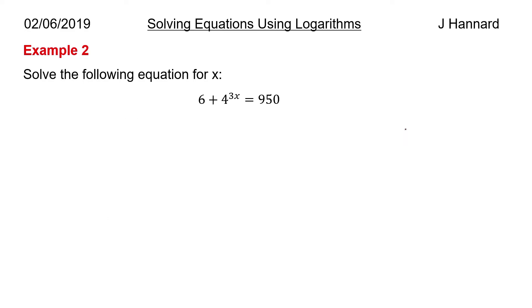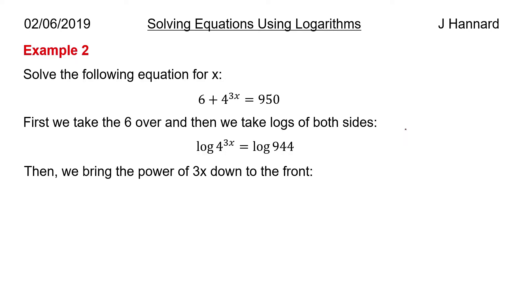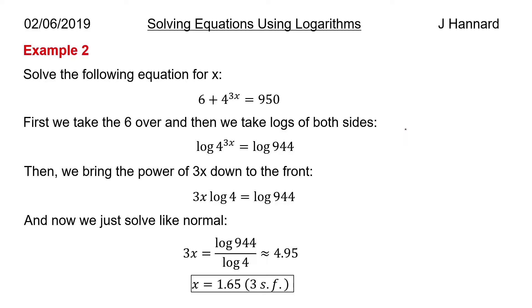Example 2 then: solve the following equation for x, so 6 plus 4 to the 3x equals 950. First we want to tidy up the top, take the 6 over and then we'll take logs of both sides. So we take the 6 over and then we've got 4 to the 3x equals 944, and then we take logs of both sides so we get log of 4 to the 3x equals log of 944. Use our log laws so the power drops down to the front: 3x log 4 equals log 944. Divide both sides by log 4 and we get 3x equals that, and then we get x equals 1.65 to 3 significant figures.